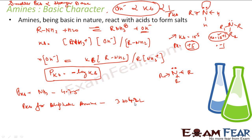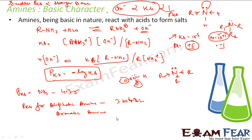Aromatic amines are weaker bases. The aryl group has an electron-withdrawing effect — it withdraws electrons from the nitrogen, making nitrogen less electron-rich and thus less reactive. Their pKb values are in the range of 9 to 10.